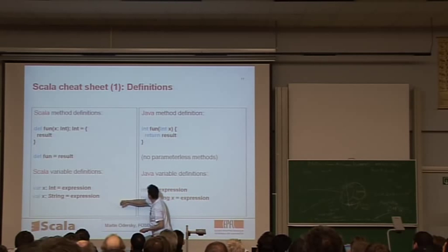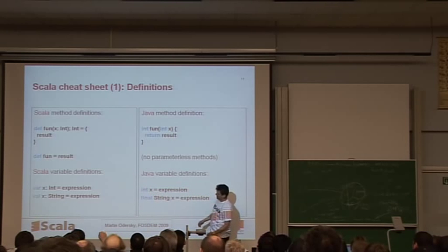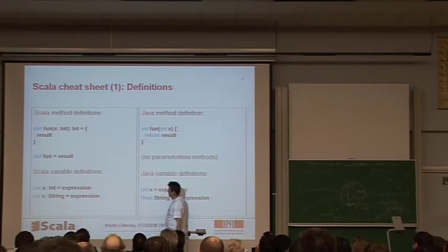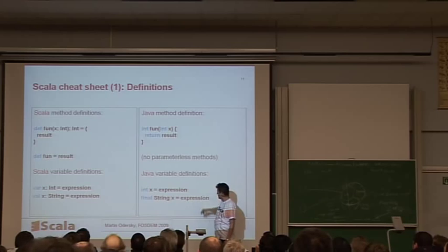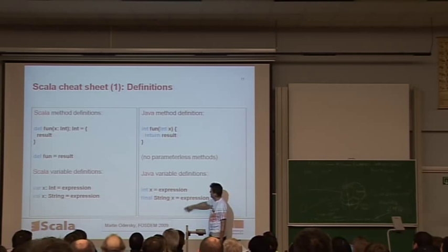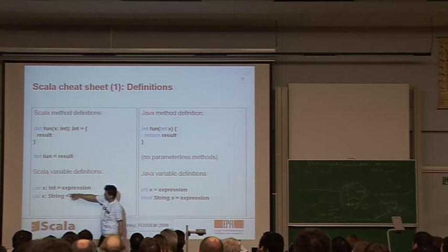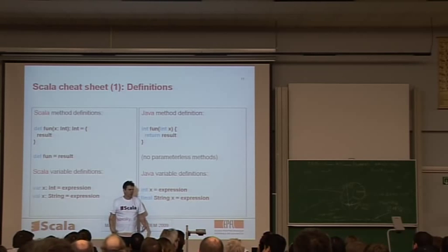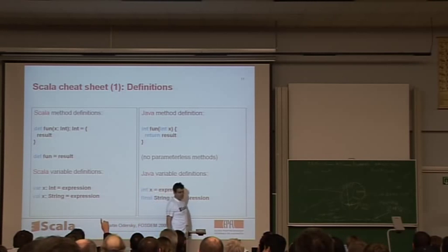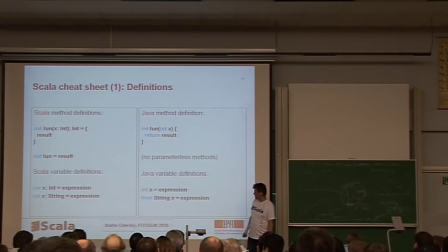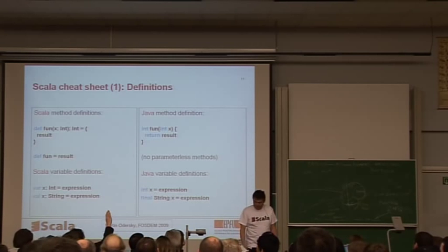Variable definitions. So that's the Java form, int x equals expression. In Scala, you write var x colon int equals expression. And if you want it to be immutable, which is the functional way, then you write val instead of var. So that means you have a variable that you will not assign to later on. The initial value is also the final value of that variable. So that would correspond in Java to final string x equals expression.